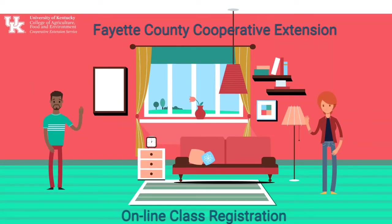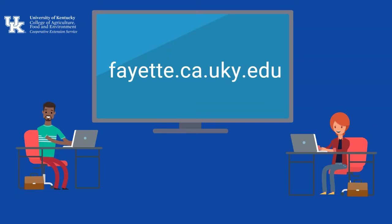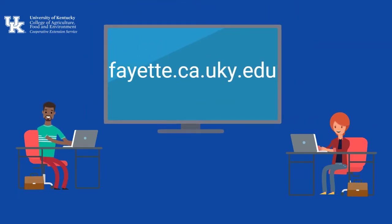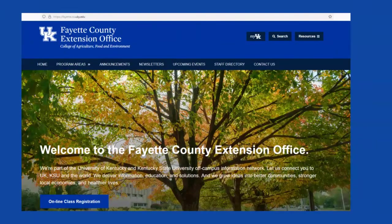Want to register for classes online? Check out our online registration system. On your computer or large tablet, go to fayette.ca.uky.edu and click online class registration.